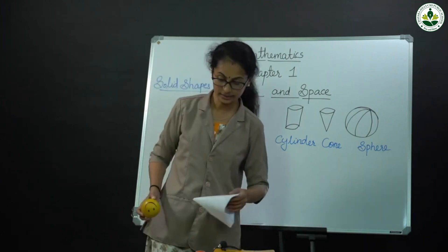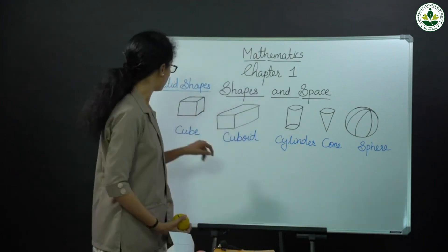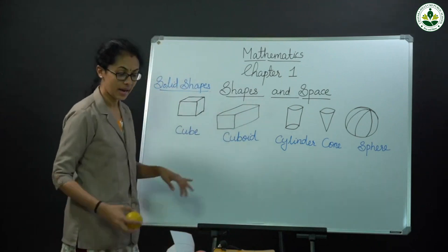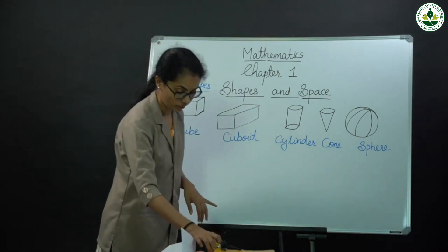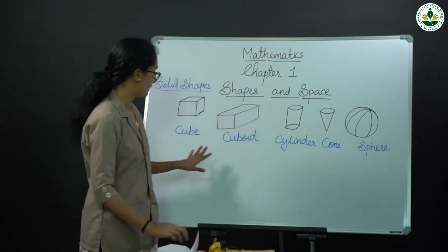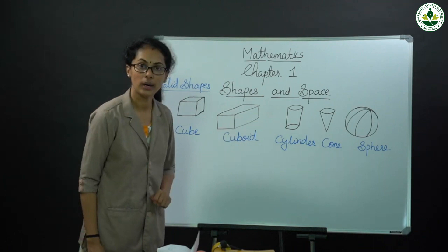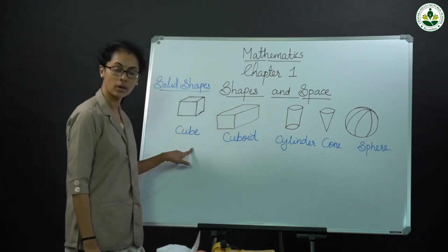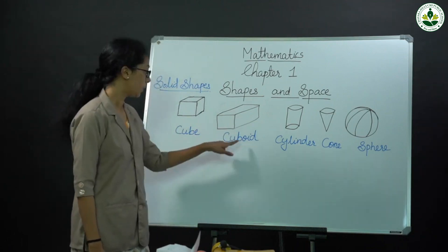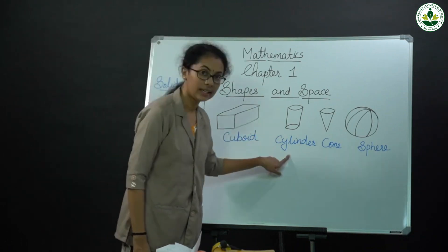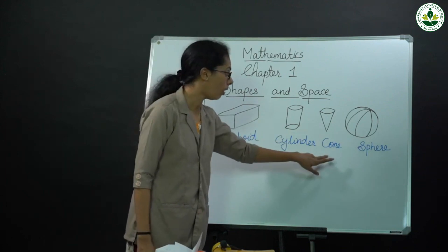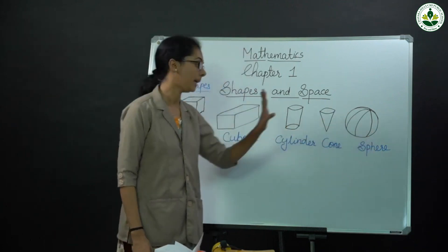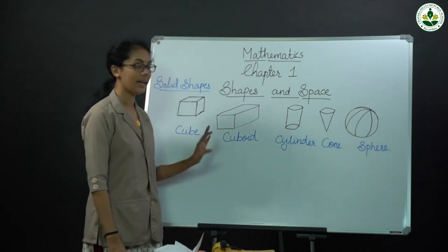Then another two shapes — cube and cuboid. These are five solid shapes. Once more: cube, cuboid, cylinder, corn, and spear.